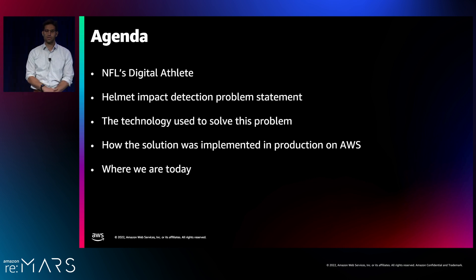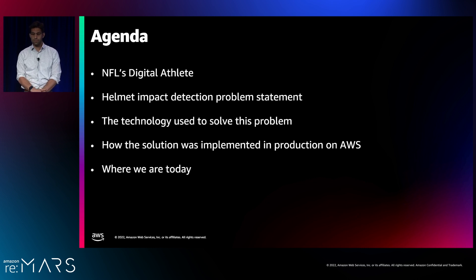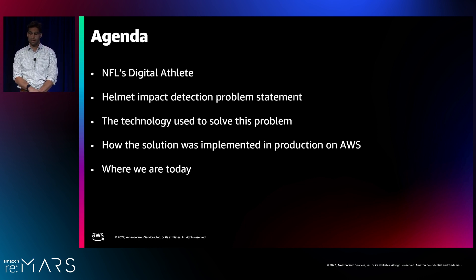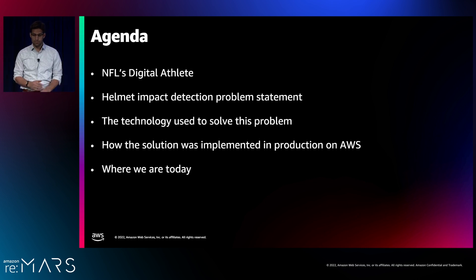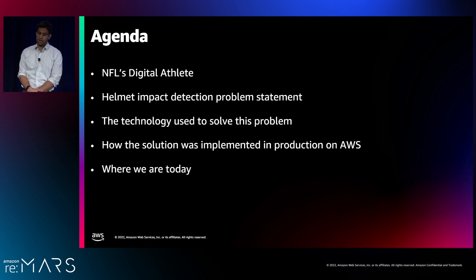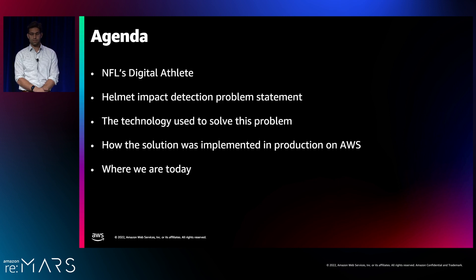A brief overview of what we're going to be presenting today: first, we're going to take a look at the NFL's digital athlete program, what it is and how we're leveraging data to make the game safer. Then we're going to talk about a specific problem we've been working on — using computer vision to detect helmet impacts using video. We'll talk about the technology and algorithms we're using, then Betty will share implementation details, and Jarvis will give us an update on current progress and next steps.